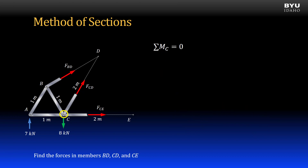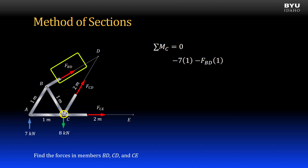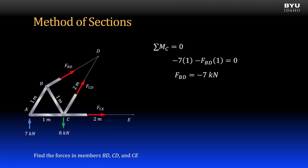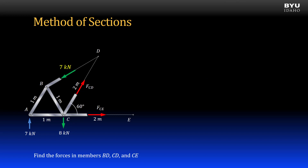I will sum moments about point C first. In my equation, I have the 7 kN reaction force times its moment arm of one meter, acting in the negative direction by the right-hand rule. I also have force BD times its moment arm from point C of one meter, also acting in the negative direction. All equal to zero. Solving for force BD, I get negative 7 kN, so the member is in compression. I revise my free body diagram with force BD shown in the correct direction.